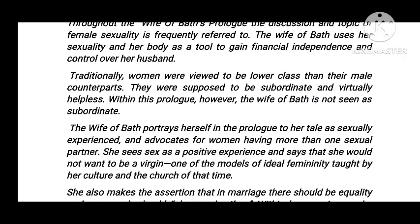The Wife of Bath portrays herself in the prologue as a sexually experienced woman and advocates for women having more than one sexual partner. She sees sex as a positive experience and says she would not want to be a virgin — one of the models of ideal femininity taught by her culture and the church at that time.